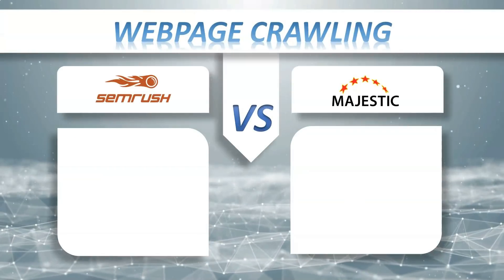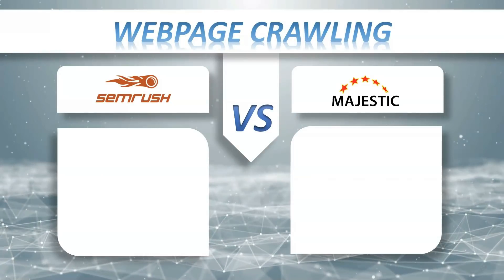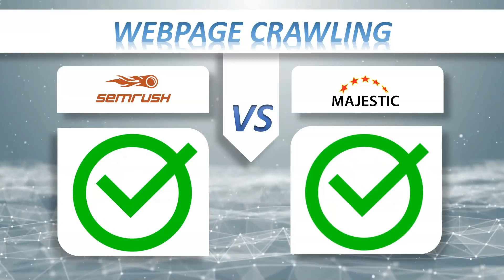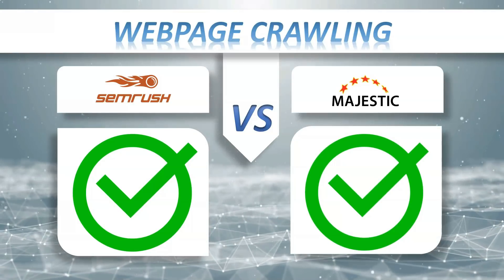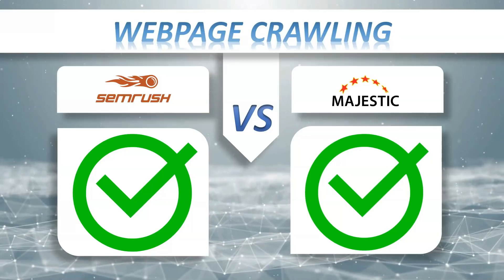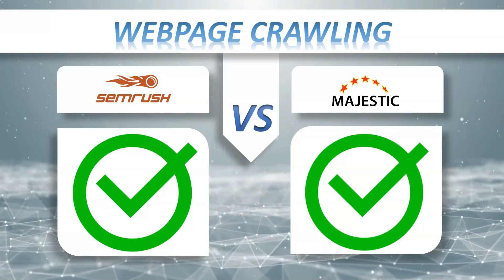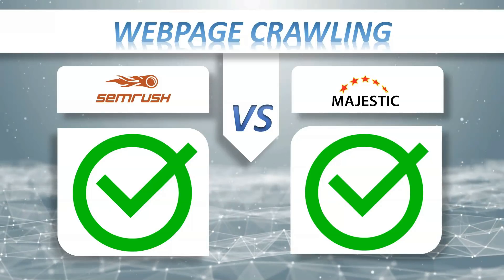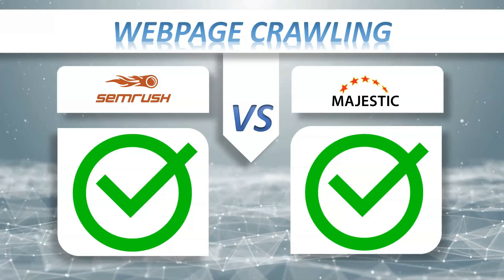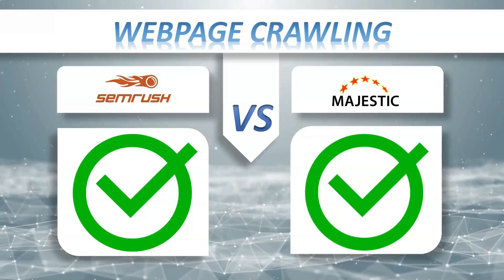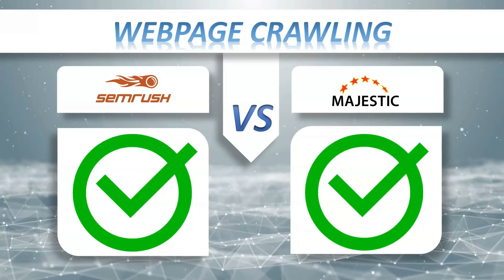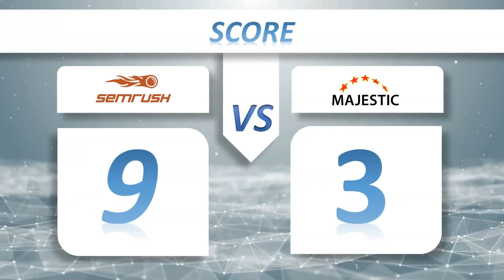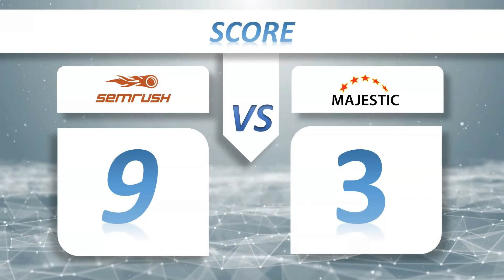Web page crawling: SEMrush yes, Majestic yes. A site audit crawls all the pages it finds on your website, then provides an overall SEO health score, visualizes key data in charts, flags possible SEO issues, and provides recommendations on how to fix them. So let's see the score: SEMrush 9, Majestic 3.